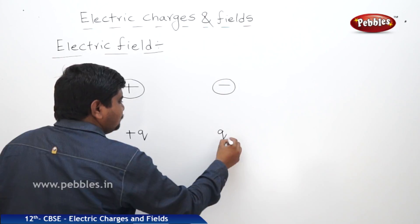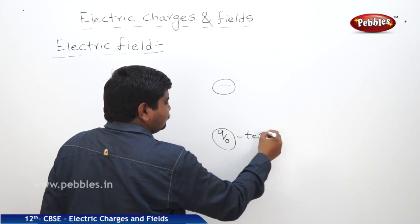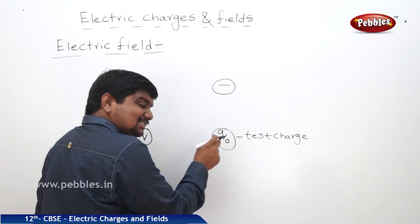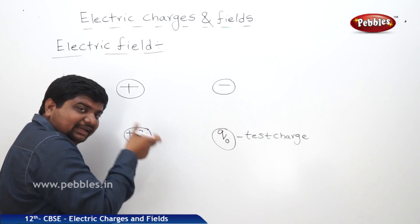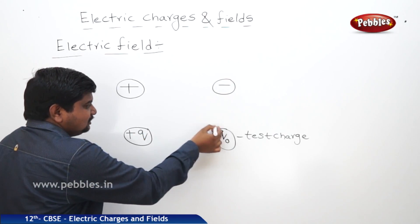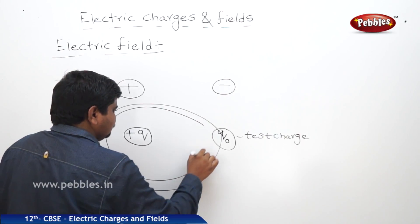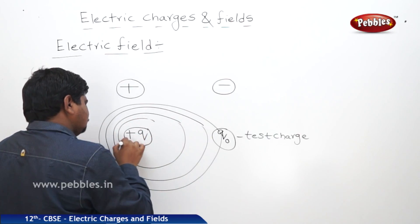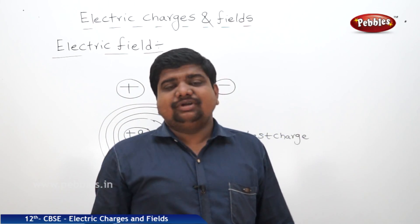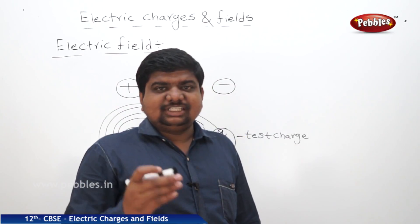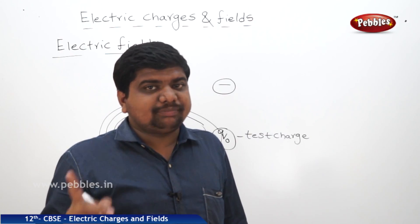At a finite distance there is a charge q₀ — this is the applied charge, this is the test charge. The magnitude of the test charge is less than the applied charge. So this test charge is experiencing a force of attraction or repulsion due to this original charge. The space which covers the region around the applied charge to the test charge is called electric field. The space surrounding a charge where another test charge experiences a force of attraction or repulsion is called electric field.